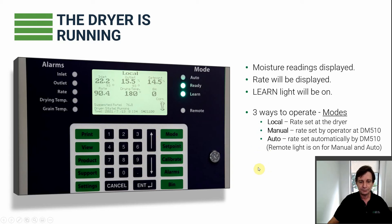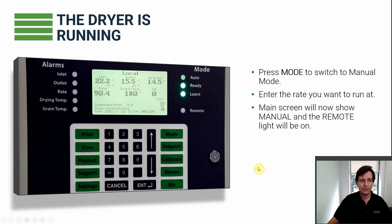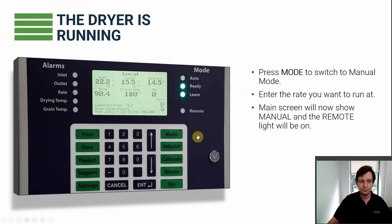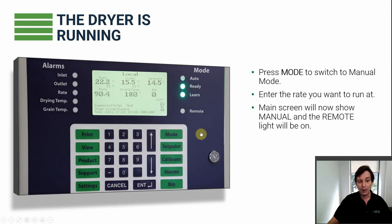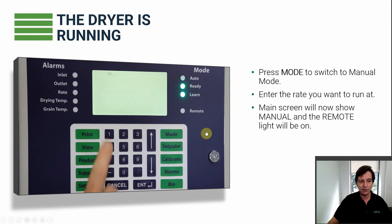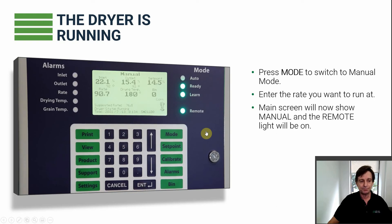To change from local to manual mode, just press the Mode key, select Request Manual (number one), and then put in the speed you want to run at. Very simple — one key press and you're where you want to be.